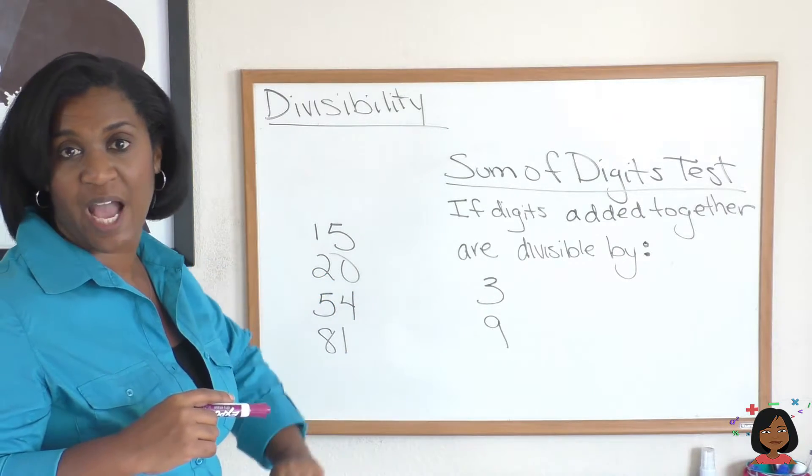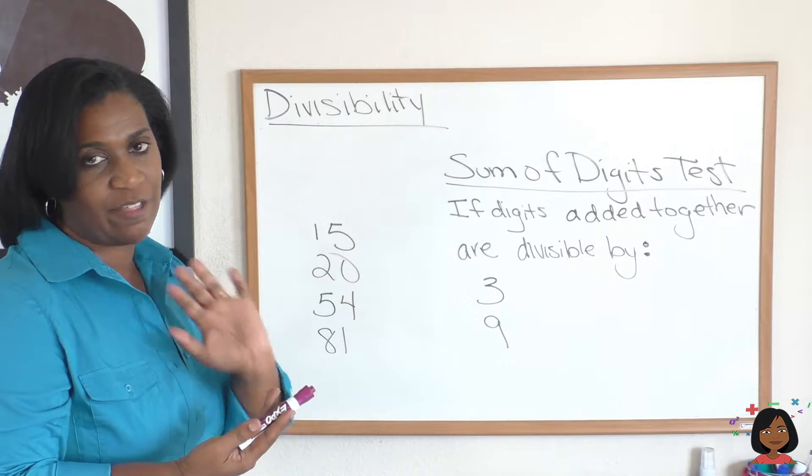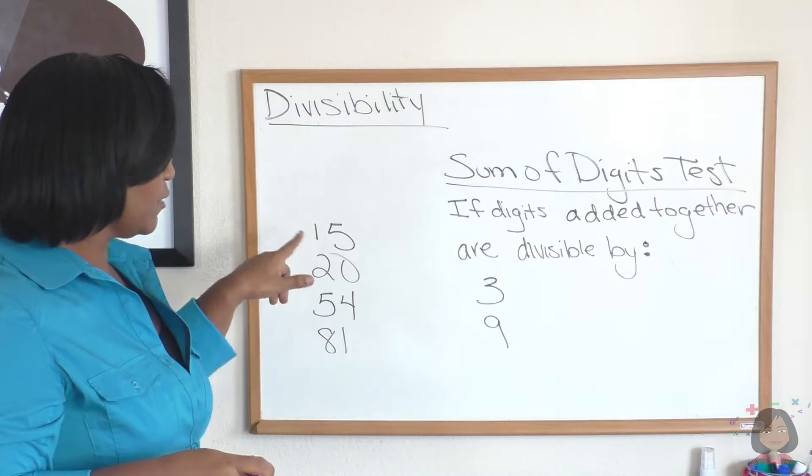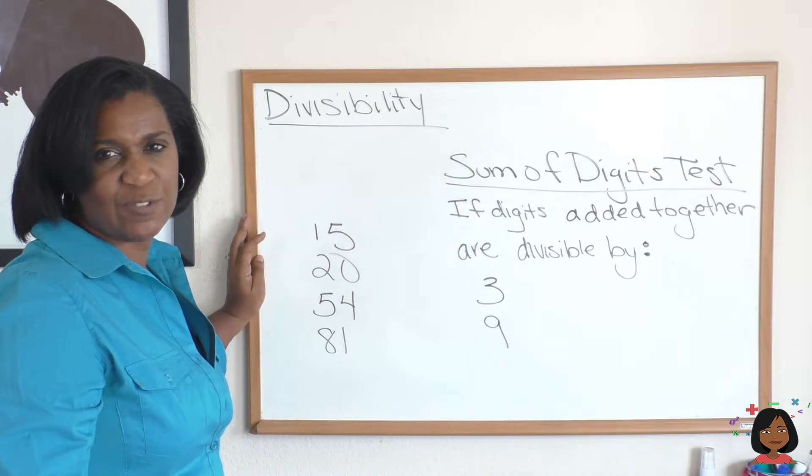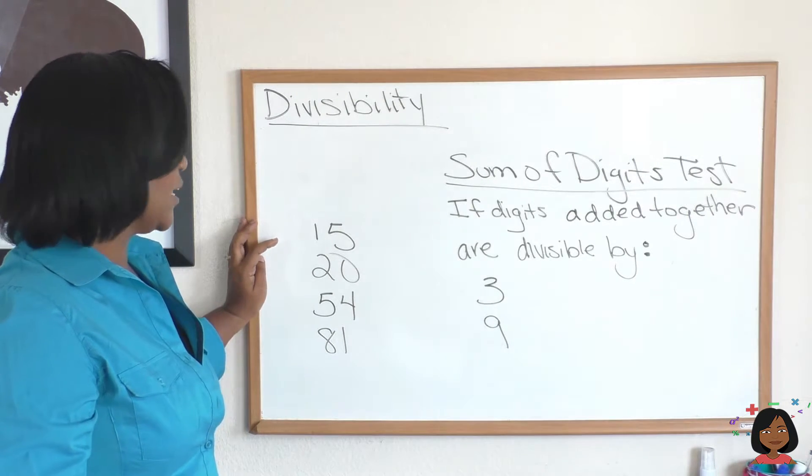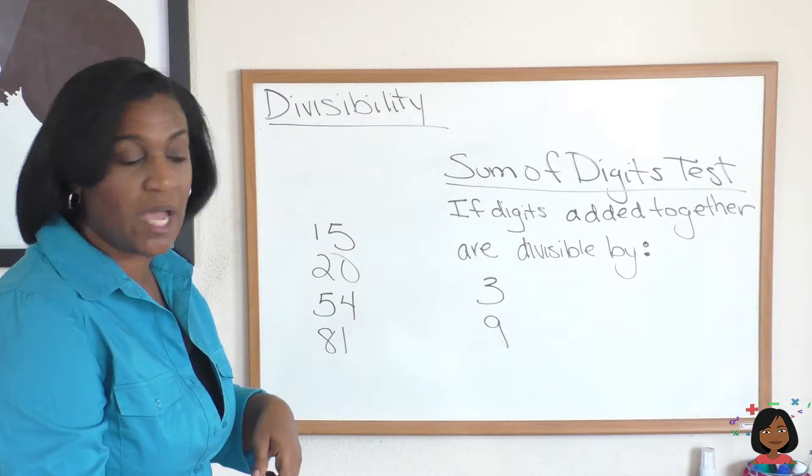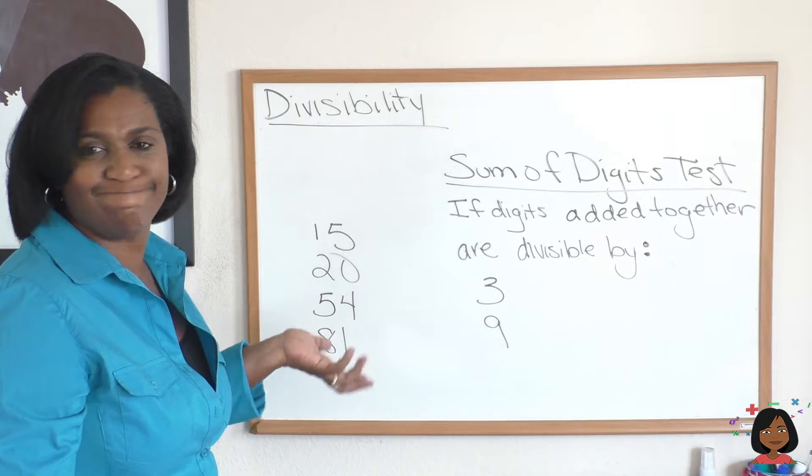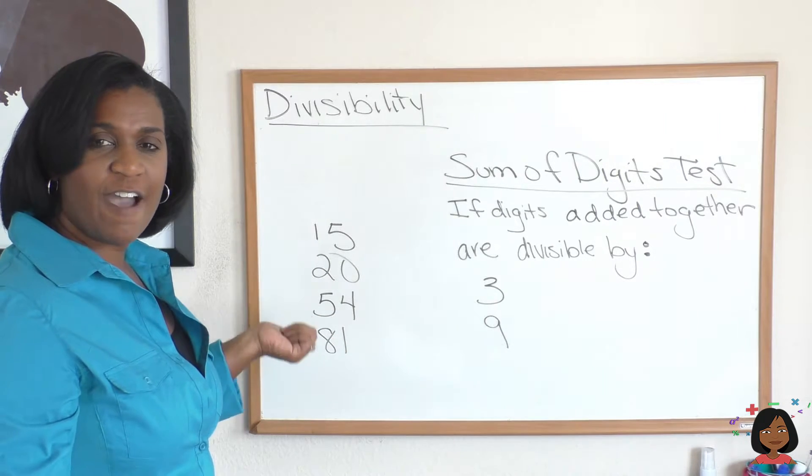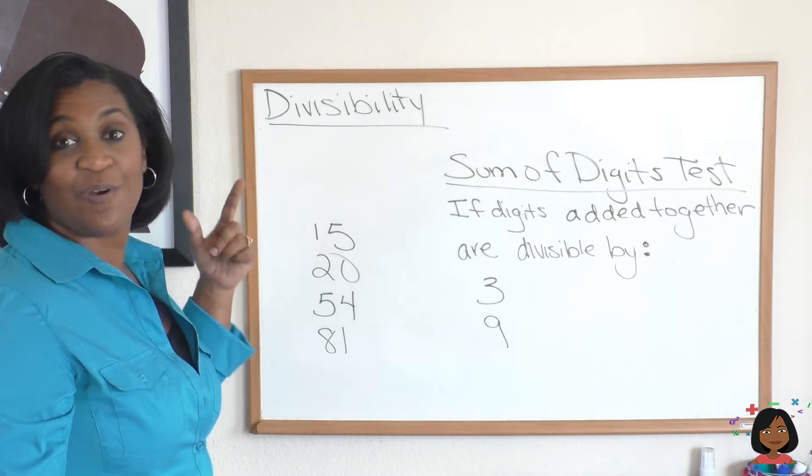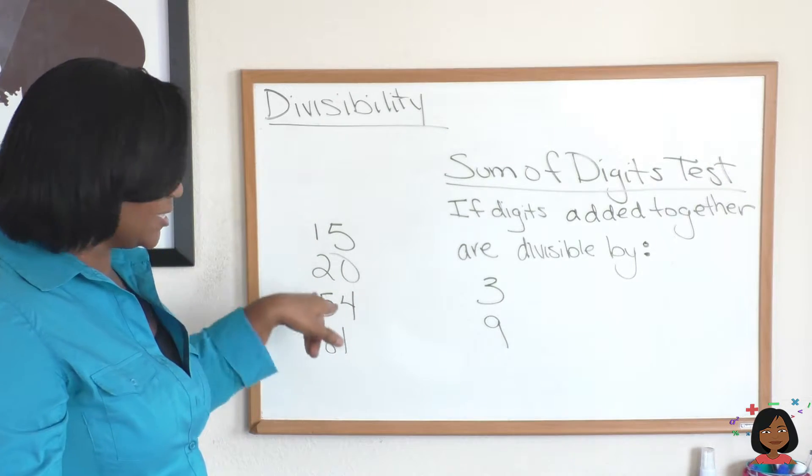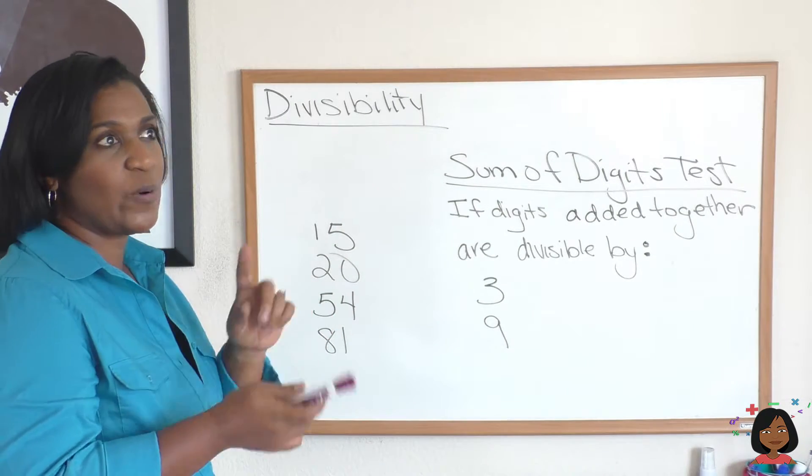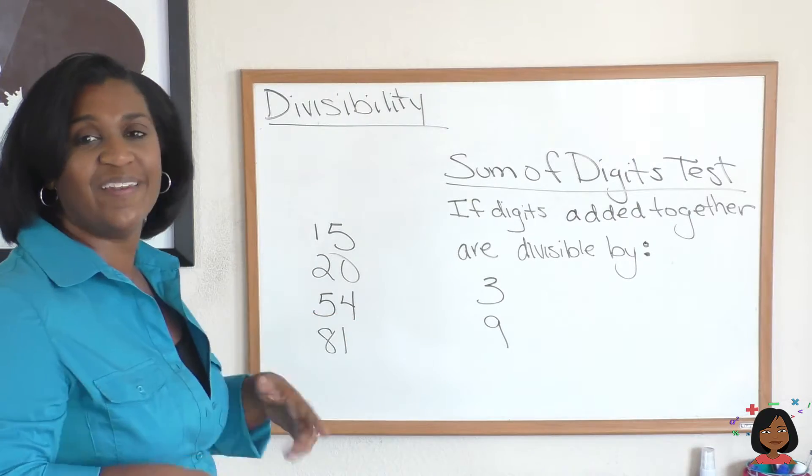There's one other test. We have one for 9. Same thing. If we add the digits together, and that number is divisible by 9, then your number is divisible by 9. Let's try it. 5 plus 1 is 6. Is 9 divisible by 6? Nope. Can't divide 9 into 6, so 15 is not divisible by 9. What about 20? 2 plus 0? 2. Can 9 go into that? Nope. Doesn't work. 54. 5 plus 4 is 9. So 54 is divisible by 9 because these digits are divisible by 9 when added together. What about 81? 8 plus 1 is 9. Does 9 go into 9? Yes, it does. So 81 is divisible by 9.